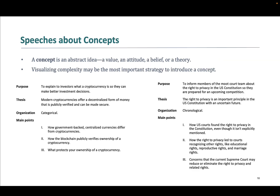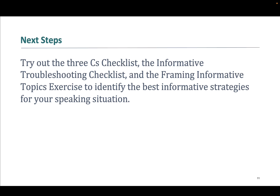And finally, speeches about concepts, which are abstract ideas that could be theories, values, attitudes, or anything that doesn't fall into the other categories. They tend to be a little more complex than the other types of informative speeches, so it's important that you help the audience clearly visualize your ideas. One example is cryptocurrencies, which are difficult for many people to understand, organized categorically. Another explains the concept of privacy, organized chronologically.